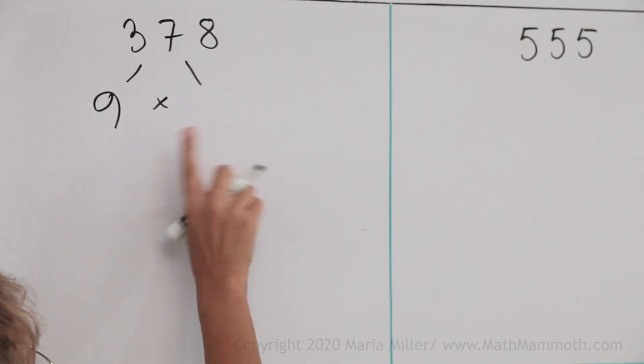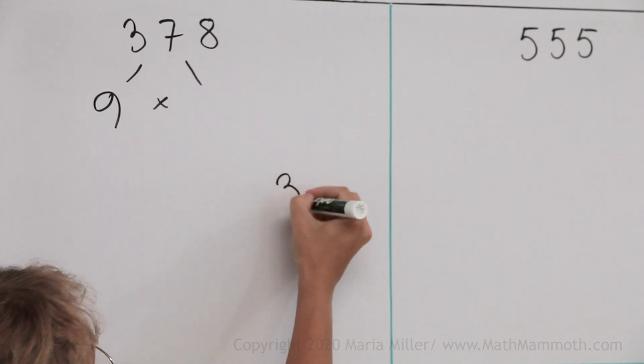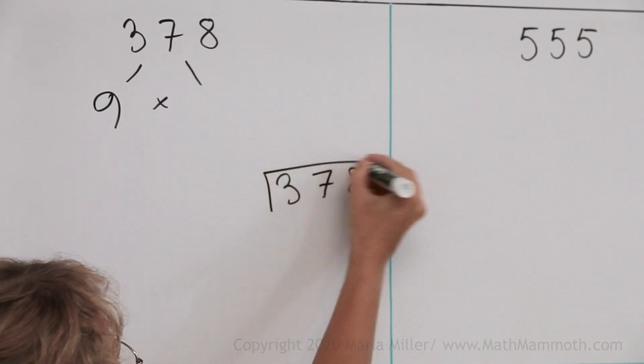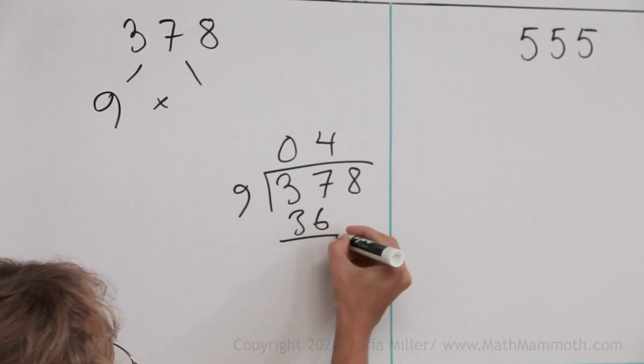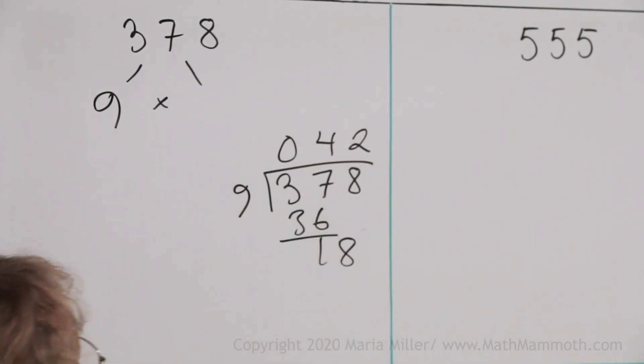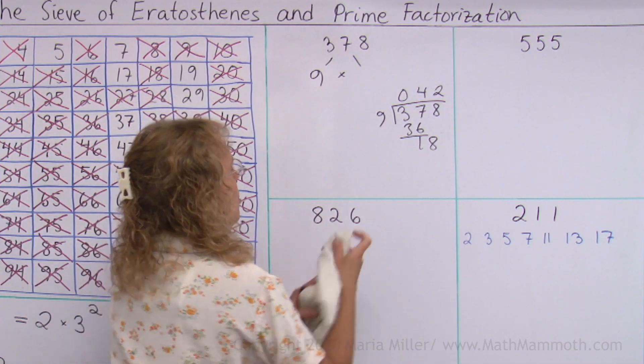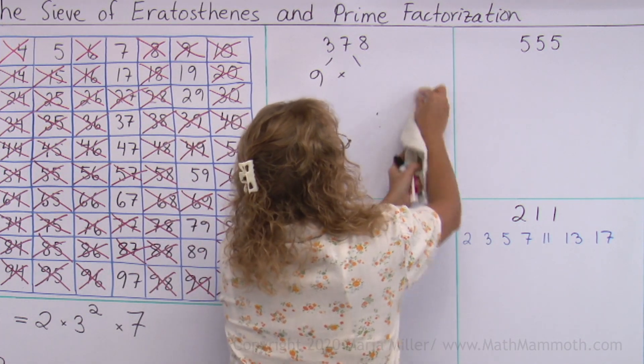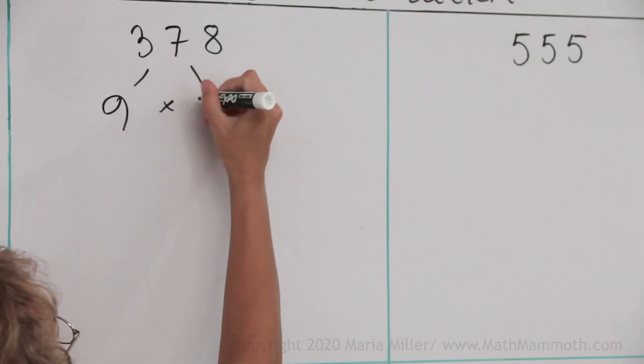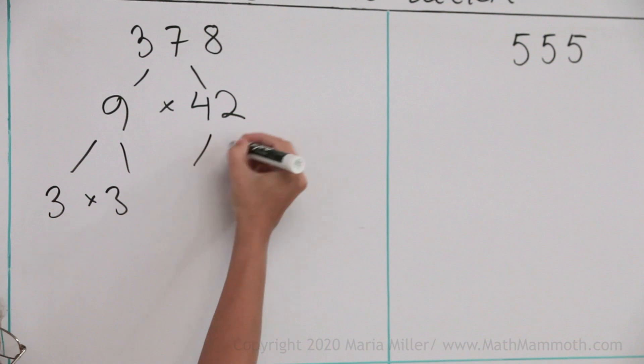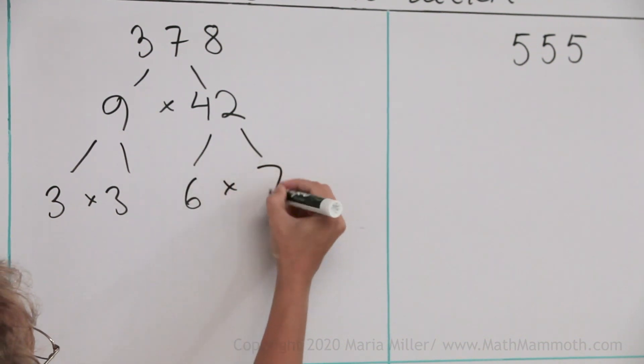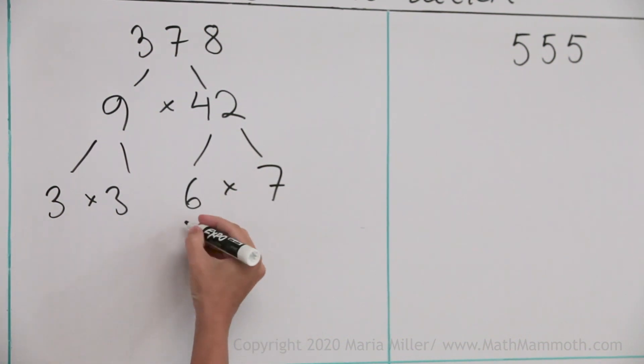And 9 times what? I'll find that using long division here. I'll divide it by 9. We get 4 times 9, and then 18, so it is 2. So 9 times 42. Now I'll just erase it, I won't need it anymore. Now 9 factors into 3 times 3 again, and 42 is 6 times 7. 7 is prime, but 6 still continues to 2 times 3.